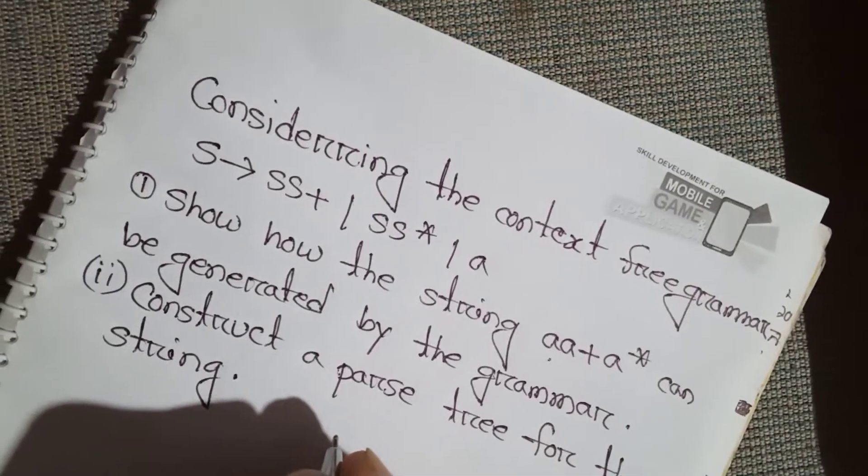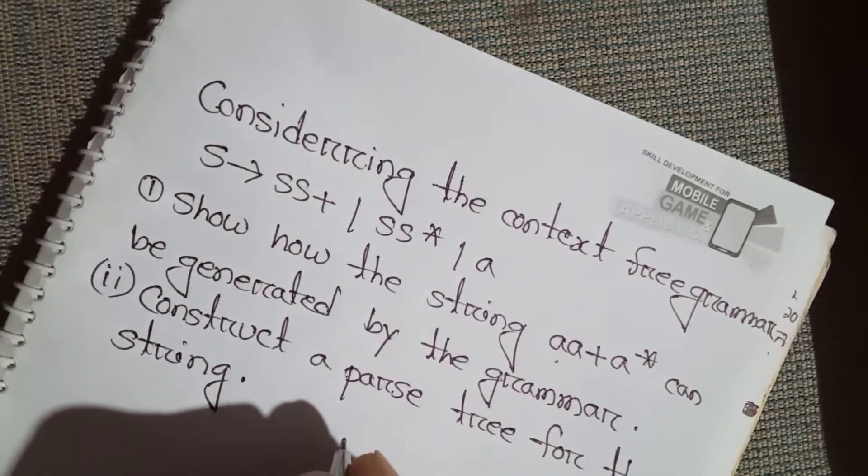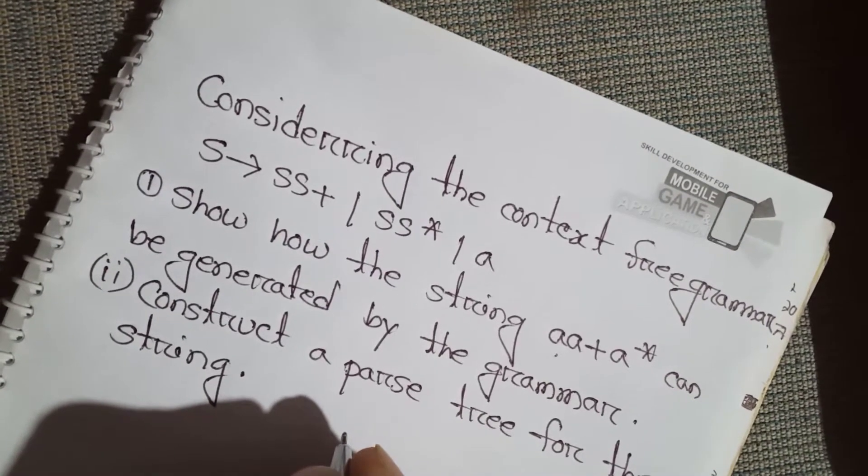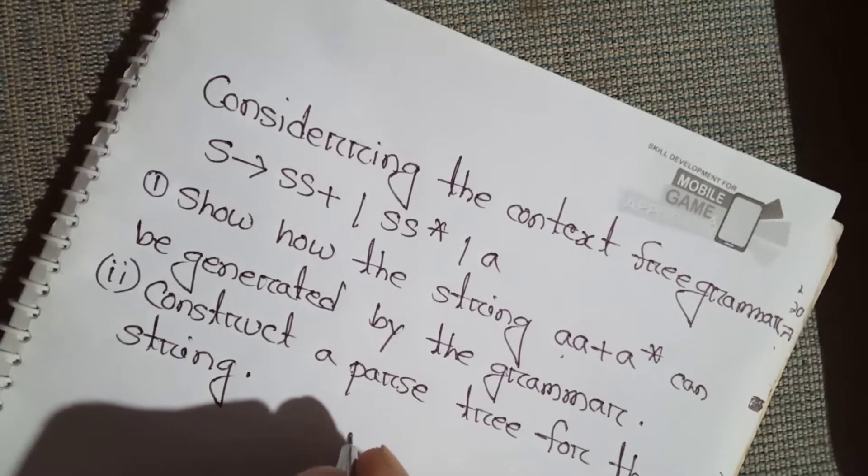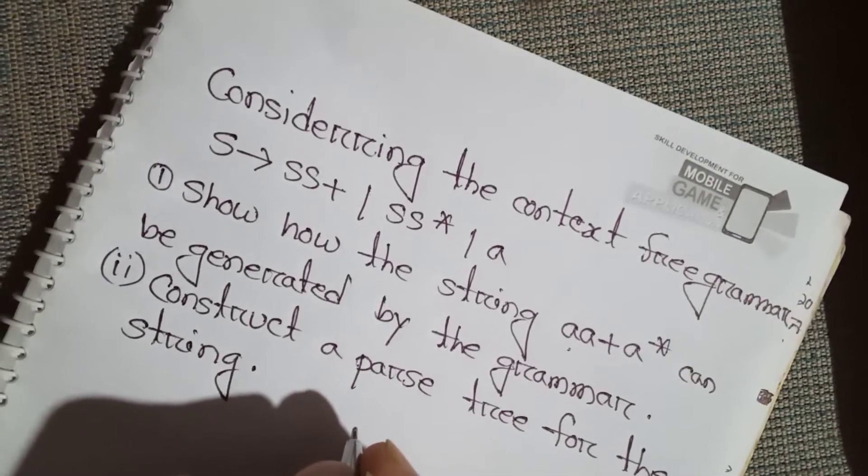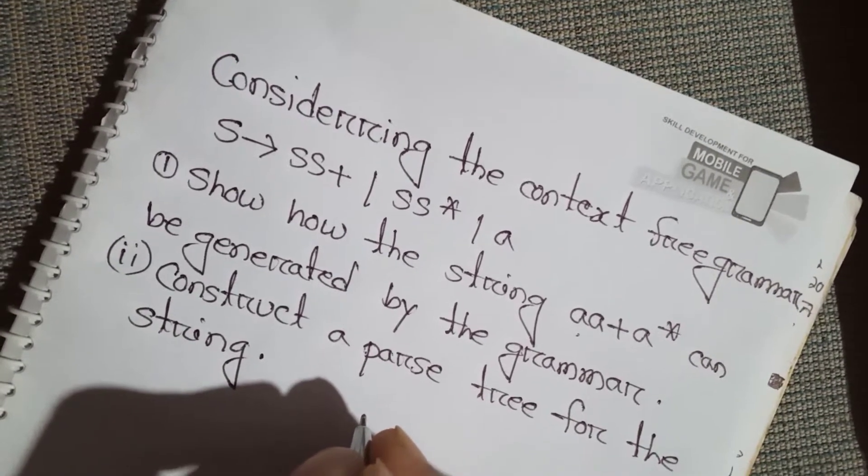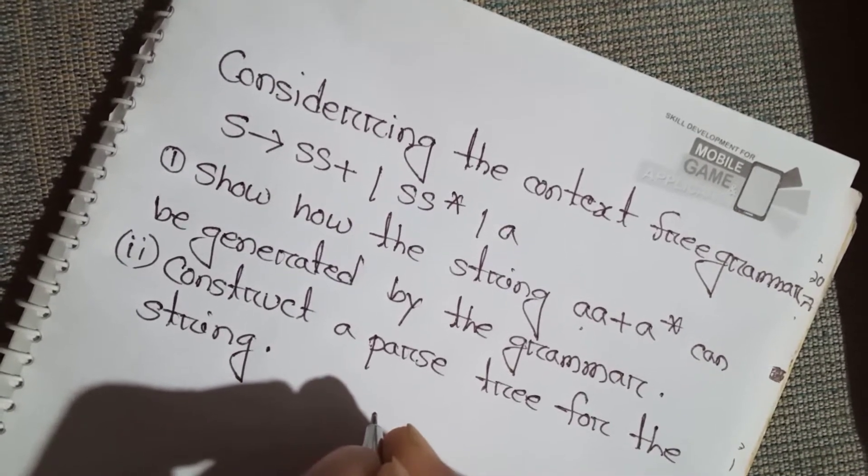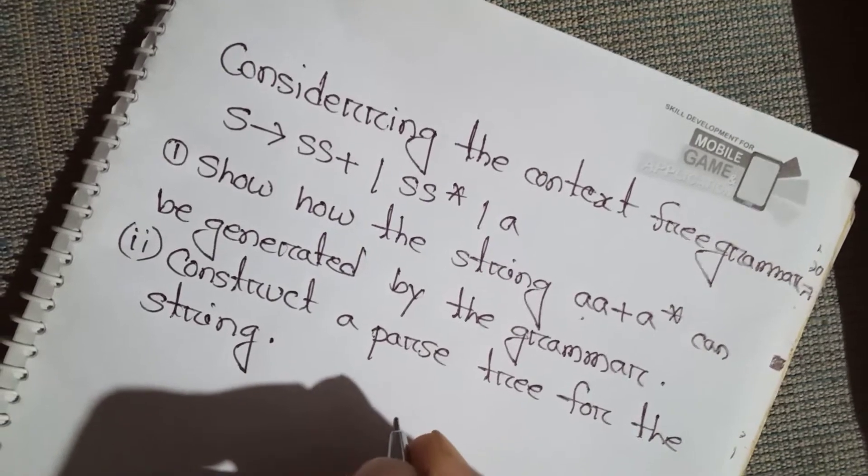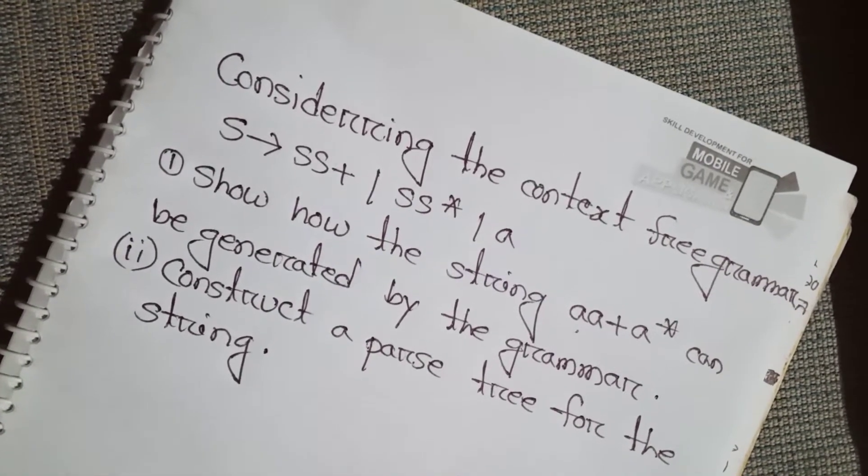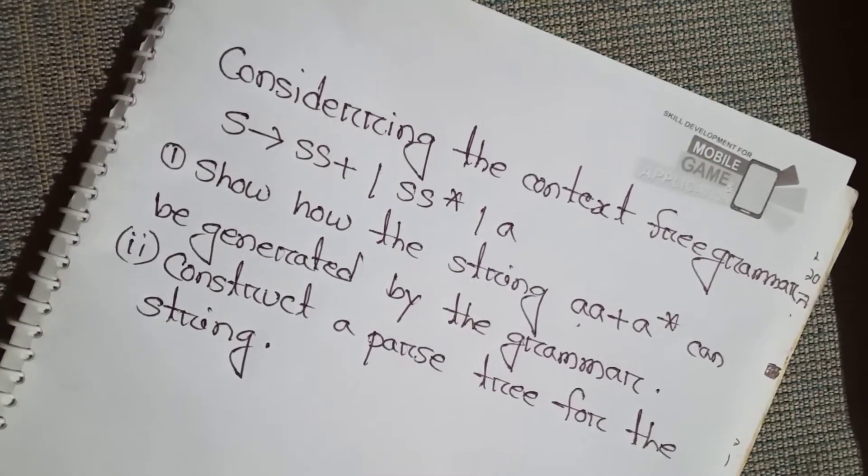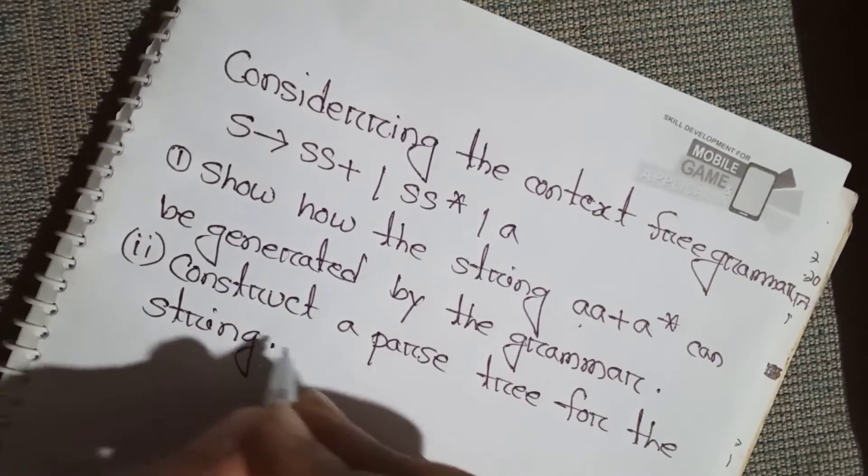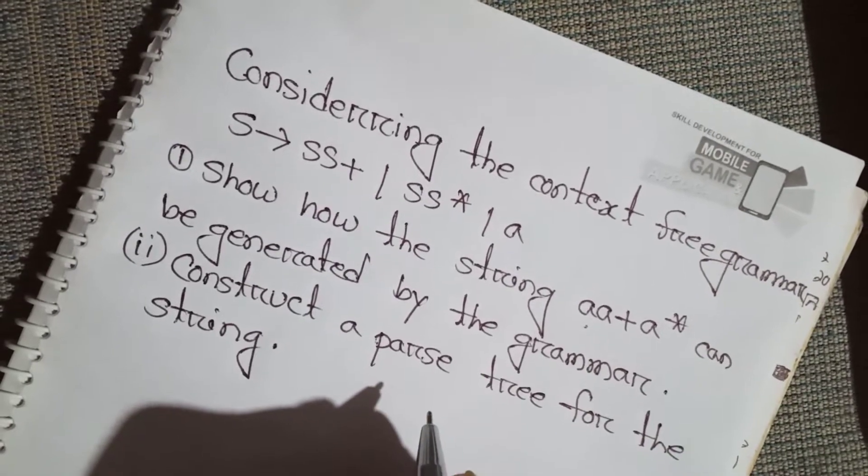Hello viewers, assalamualaikum. Today we solve this problem. The question: considering the context-free grammar S → SS+ | SS* | a. Question one: show how the string aa+a* can be generated by the grammar. Question two: construct a parse tree for the string. Now we start solving step by step.